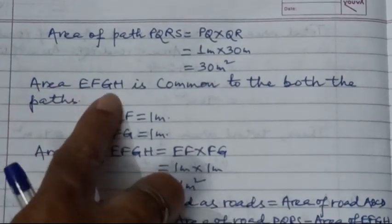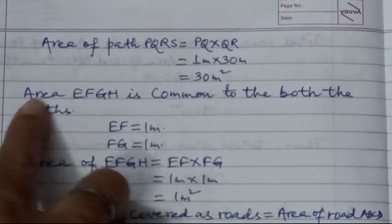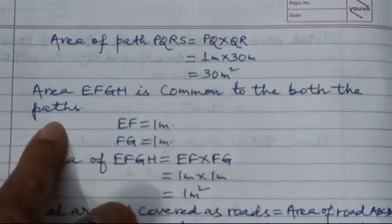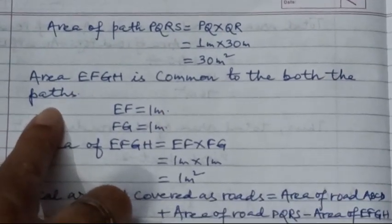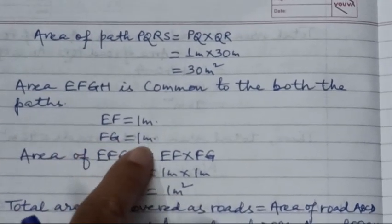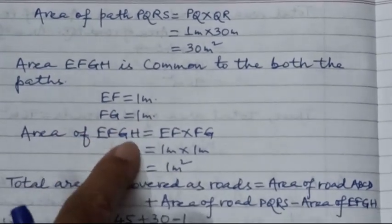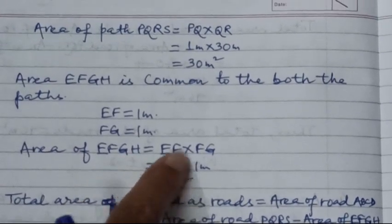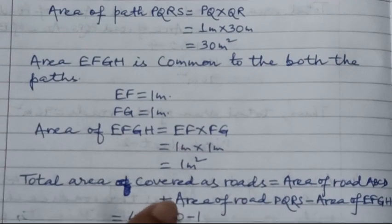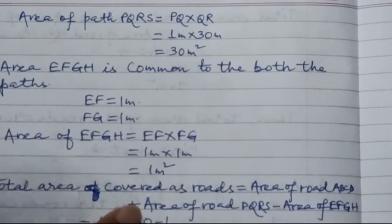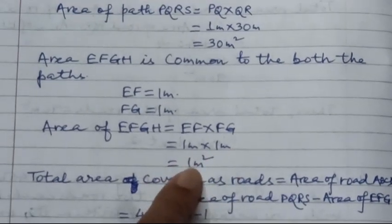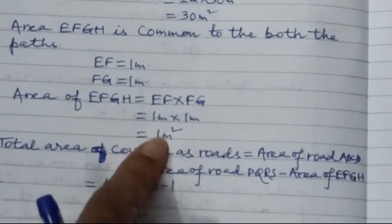The area of EFGH, which is common to both roads — both paths — is found as follows: EF equals 1 meter and FG equals 1 meter. The area of EFGH equals EF into FG, side into side, because EFGH looks like a square. So 1 meter into 1 meter gives us 1 meter square.